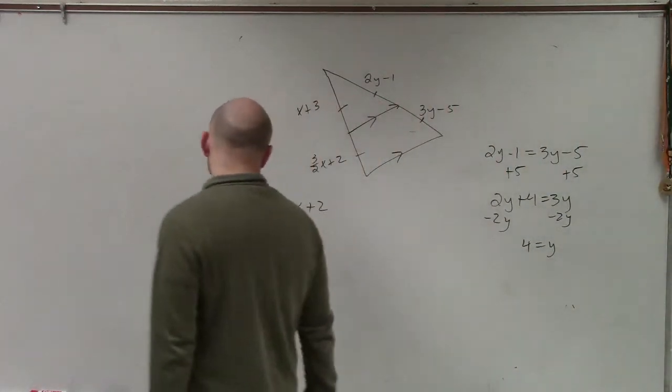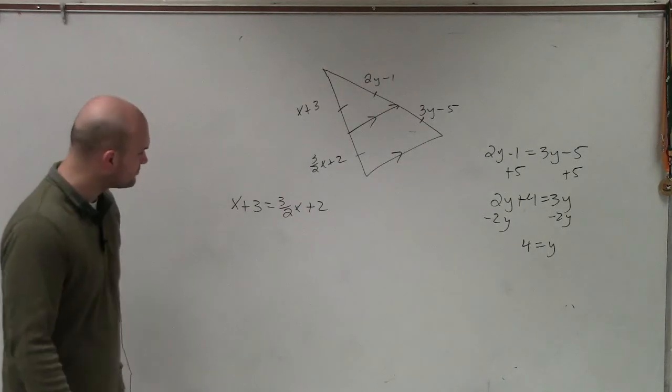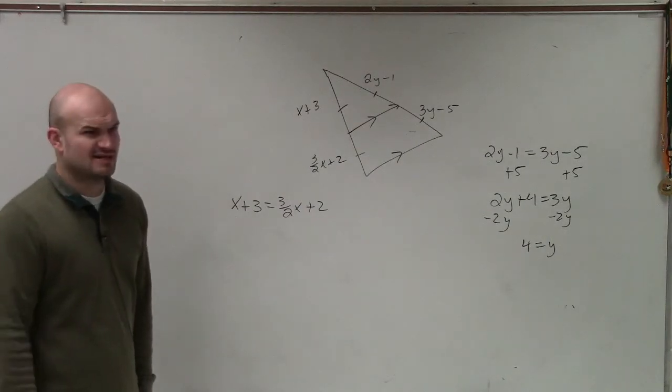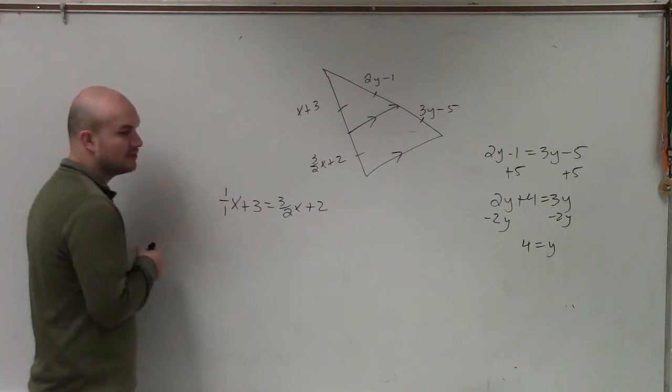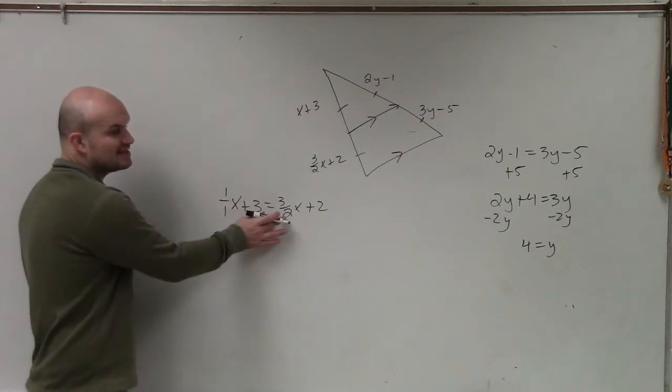And then over here, this one looks like it's much less fun, right, because it has this fraction. But just remember, you can rewrite this as 1 over 1. Now since this has a denominator, we know that 1 is here, right?